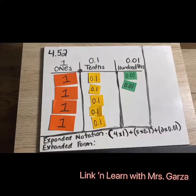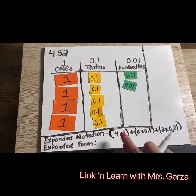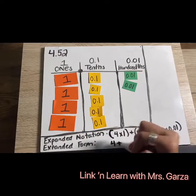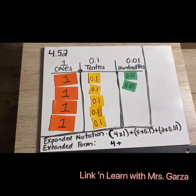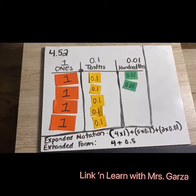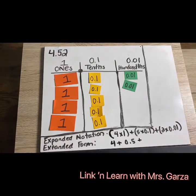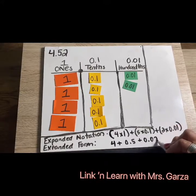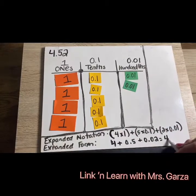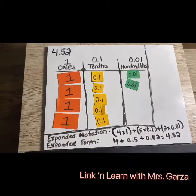Another way you can represent this would be expanded form. With expanded form, all you're doing is multiplying and taking the parentheses out. So for example, four times one is four, plus five times 0.1, which would be 0.5 — 50 cents — plus two times 0.01 would be 0.02. So if I added those up, I would have 4.52. That is the recap there.